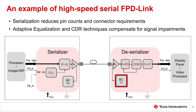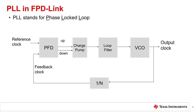Additionally, an FPD-Link deserializer includes a back-channel transmitter to send control information over a single-ended 50-ohm cable or differential 100-ohm cable. PLL stands for phase-lock loop and is a major analog component of FPD-Link used inside both the serializer as well as in the FPD-Link deserializer.